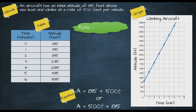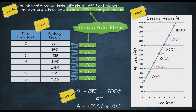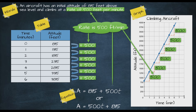Now let's look at how our rate of 500 feet per minute appears in each representation. In the word description it's explicitly stated. In the table of values, it shows up as the first differences — the value added to altitude for each additional minute. In the graph, it's the amount by which the graph increases with every passing minute. And in the equations, it's the number multiplied by the time variable t.